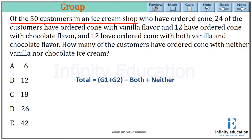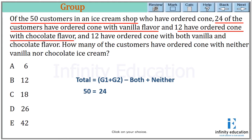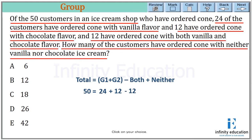Of the 50 customers — that is our total. 24 ordered vanilla, which is group one. 12 ordered chocolate, which is group two. And 12 ordered both vanilla and chocolate, so that is minus 12. Now I need to find the neither. I can see plus 12 and minus 12 cancel out, so neither equals 50 minus 24, which is 26. So 26 is the answer.